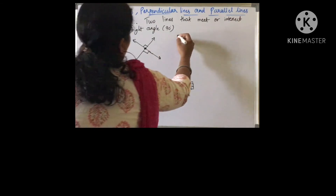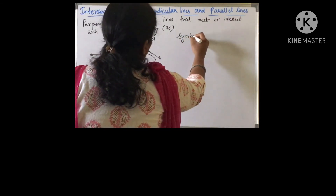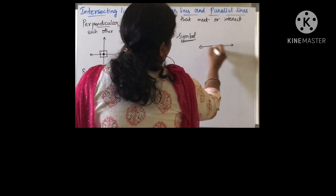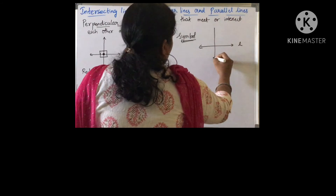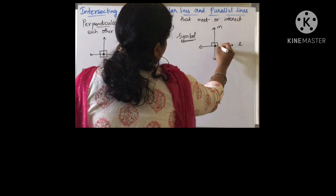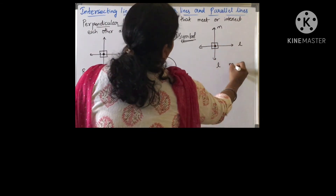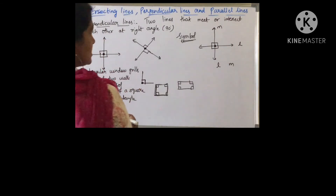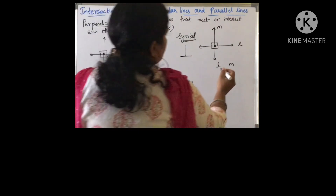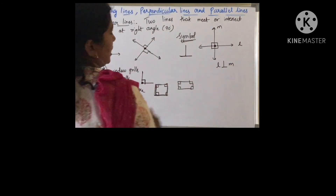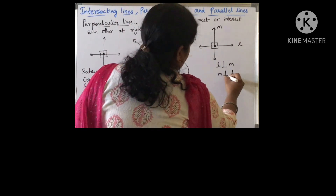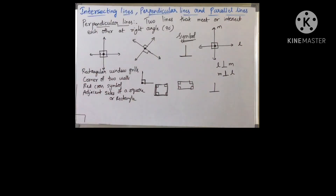What is the symbol for perpendicular lines? Suppose this line is L and this line is M, and these two lines are intersecting at this point with 90 degrees. So I can say L and M are perpendicular lines. The symbol for perpendicular lines is a reverse T. L is perpendicular to M, and we can also say M is perpendicular to L.